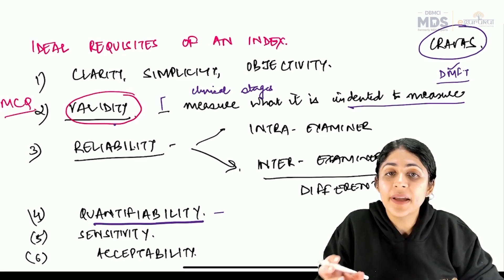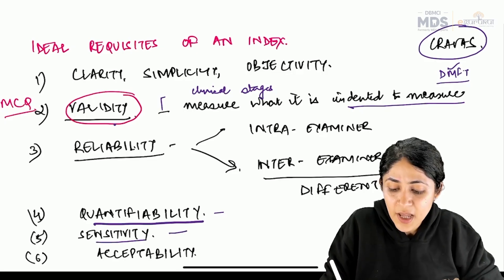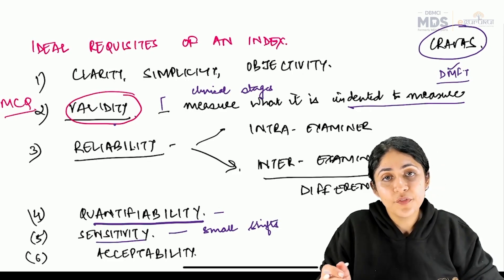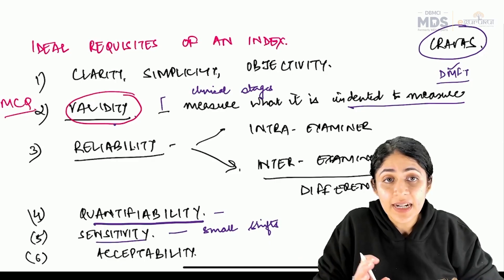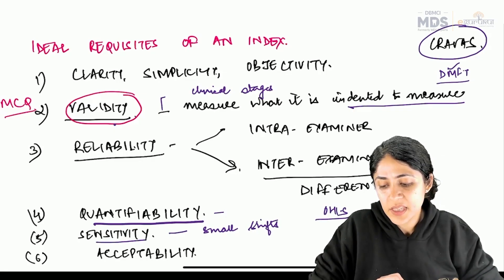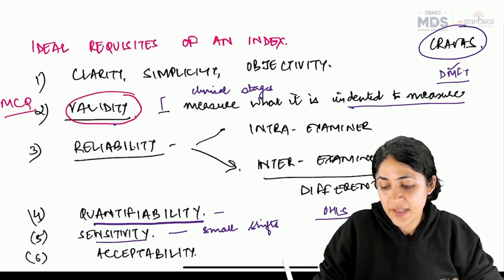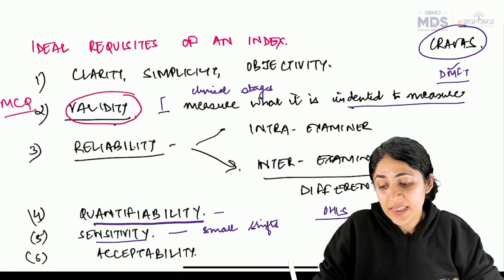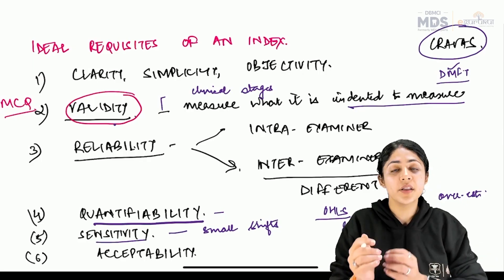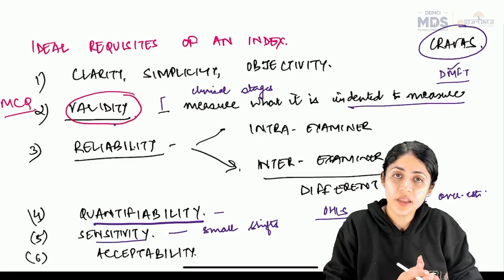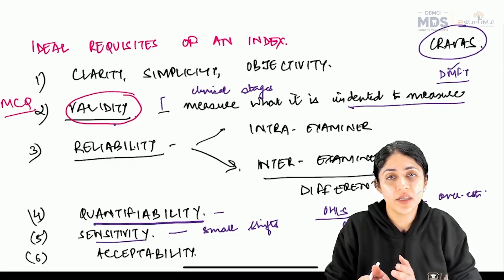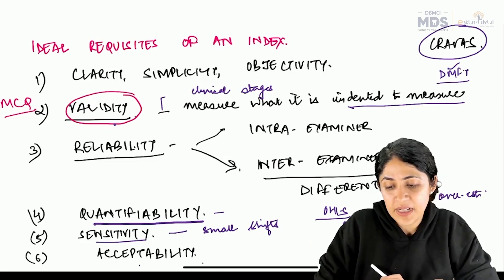Sensitivity means that the index should be able to detect small shifts in the clinical stage of a disease. In simplified indices, for example OHI-S, suppose tooth 1.6 has lesser deposits compared to 1.7 — in that case we will overestimate. In simplified indices where we take a particular segment, there is always a tendency to either overestimate or underestimate the disease, and in these cases sensitivity will be compromised.